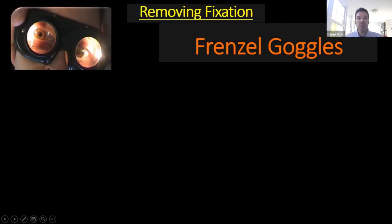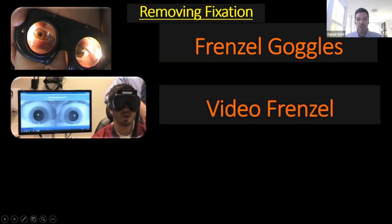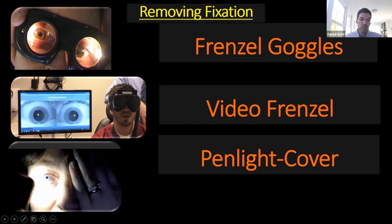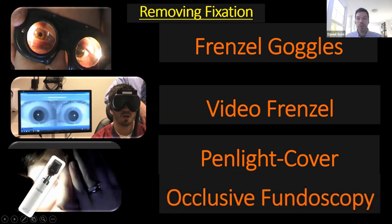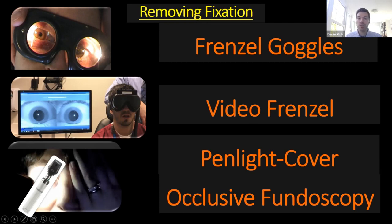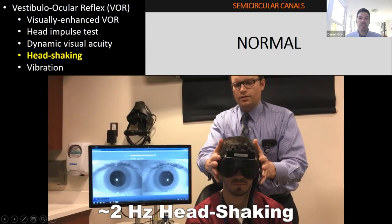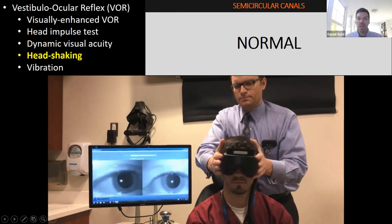Removing fixation is very handy when looking at provocative maneuvers. Ways to do that: Frenzel goggles, video goggles, the penlight cover test — effective virtually. If the patient is in person, you can do occlusive fundoscopy: cover one eye, occlude the other with a bright ophthalmoscope light so they can't fixate, using the magnification to look at the nerve and check for spontaneous nystagmus.